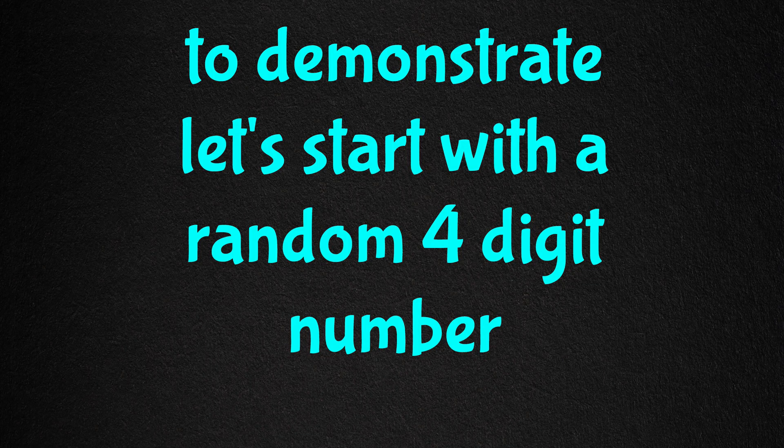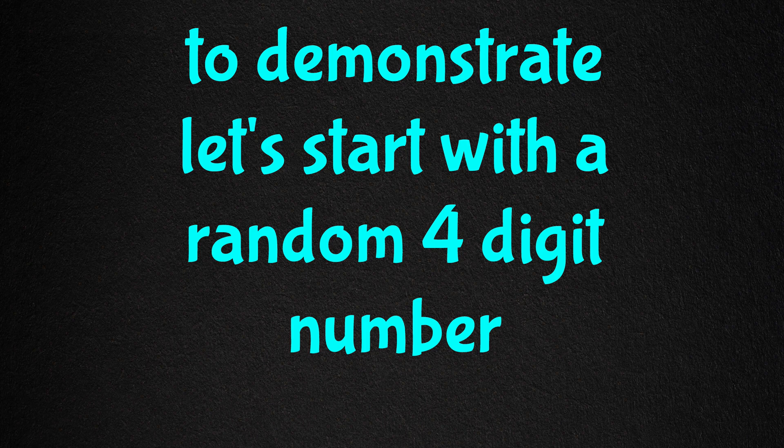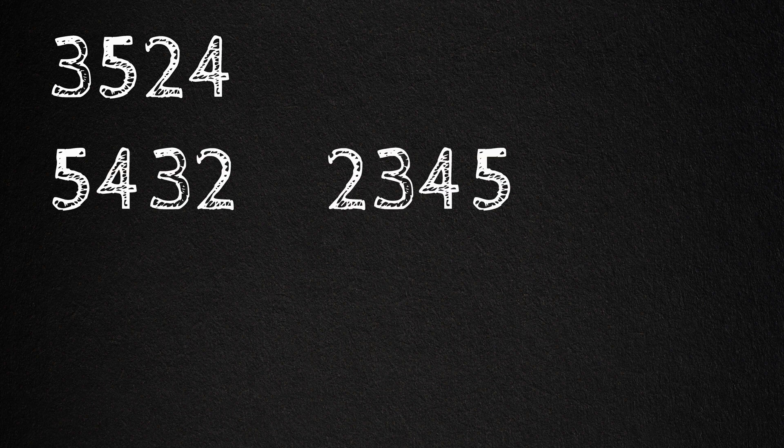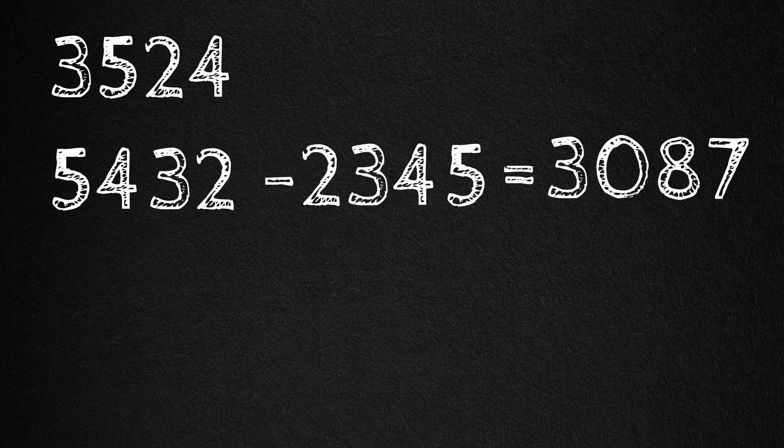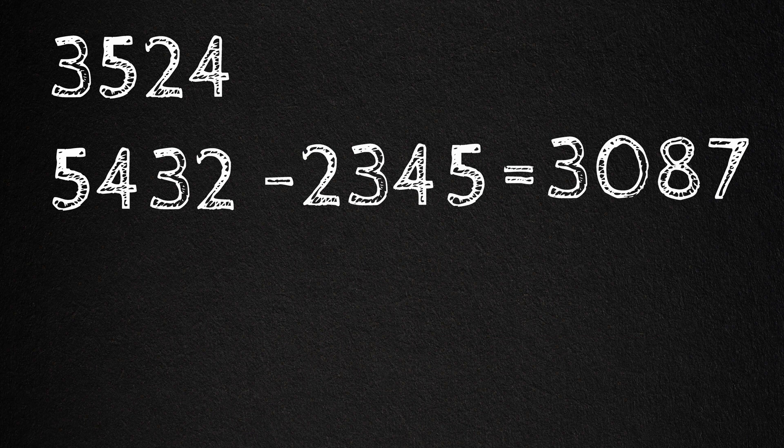So let's start with a random four-digit number. Let's say 3524. Rearranging the digits in descending order, we get 5432. Ascending order, we get 2345. And next we subtract. 5432 minus 2345, and we get 3087.